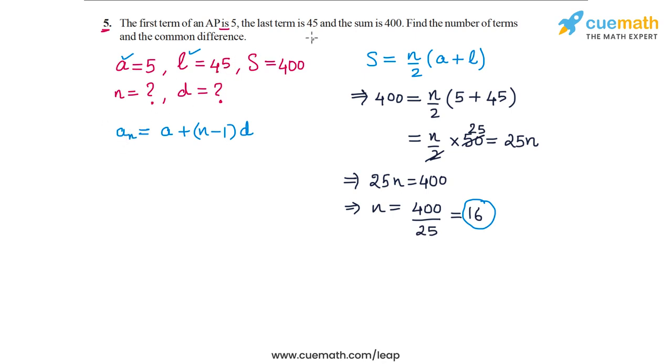In this case the Nth term is the last term which is 45. So 45 is equal to A which is 5 plus N minus 1. N is 16, so N minus 1 is 15 into D the common difference.